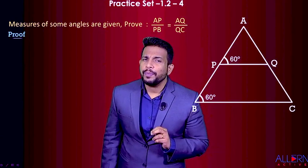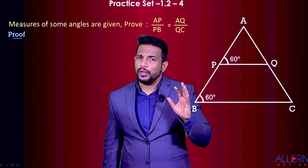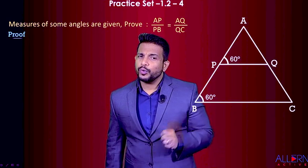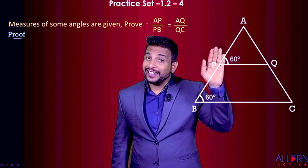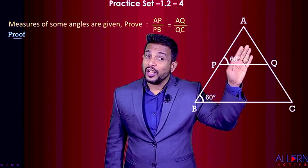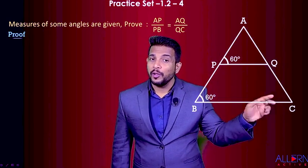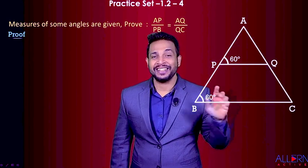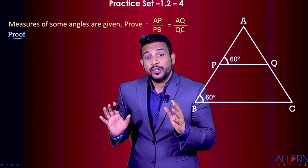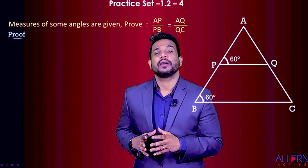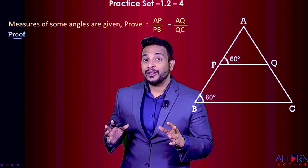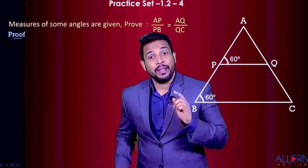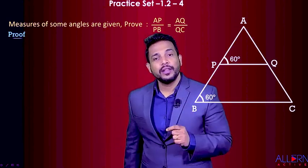Think about when we can get AP upon PB equal to AQ upon QC. We can get these ratios equal provided PQ is parallel to BC. So somehow we need to get PQ and BC to be parallel. If we get this, we are getting those ratios to be equal by the Basic Proportionality Theorem.